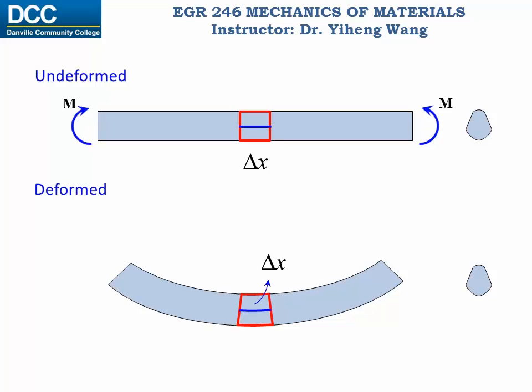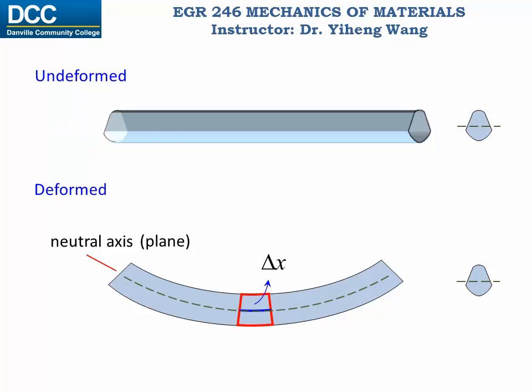In fact we can extend this analysis to this entire member and realize that there will exist a neutral axis in this member, for which its length will remain unchanged during deformation. Don't forget the neutral axis extends throughout the width of this member, making it a neutral plane.